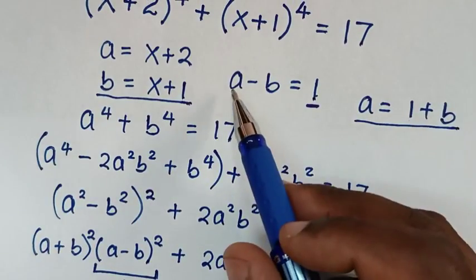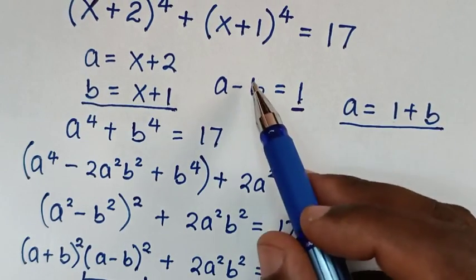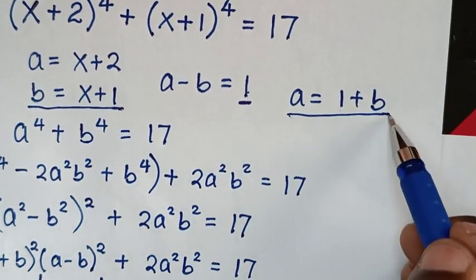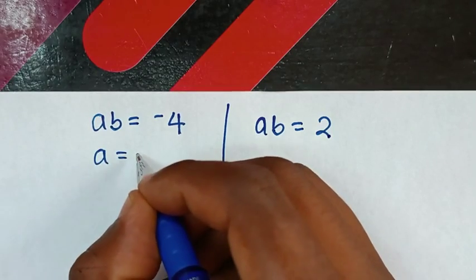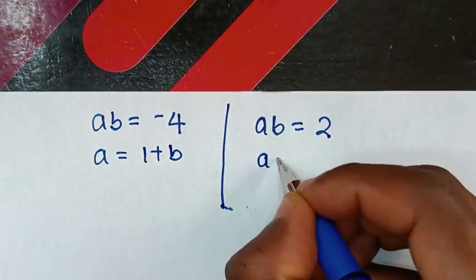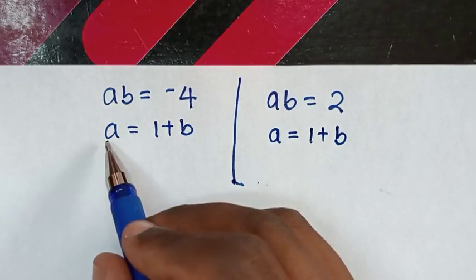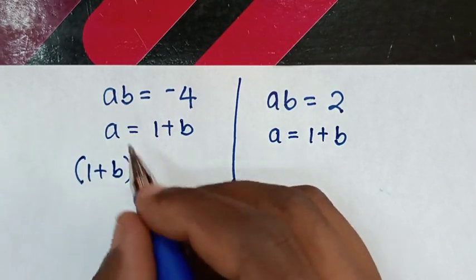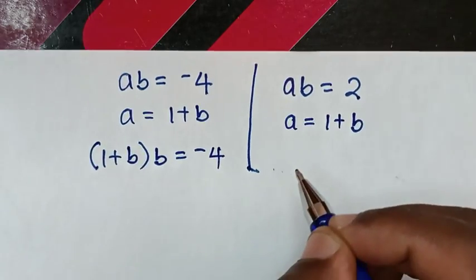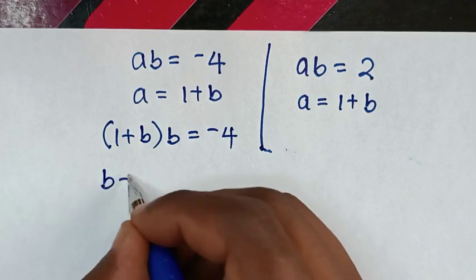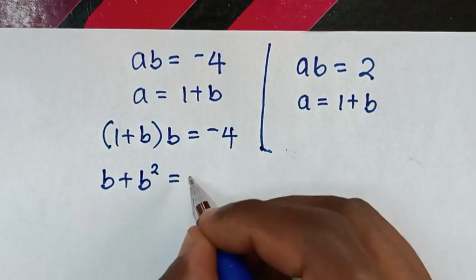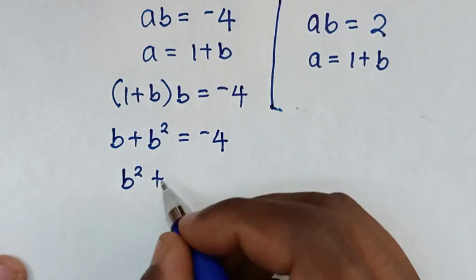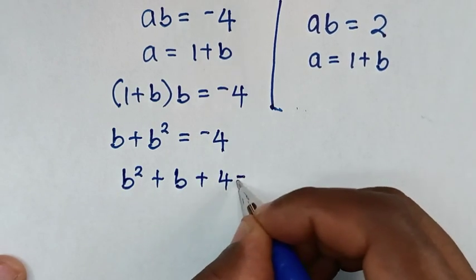From a - b = 1, taking -b to the right side gives a = 1 + b. Applying a = 1 + b into the first case ab = -4: (1 + b)·b = -4, so b + b² = -4, giving b² + b + 4 = 0.